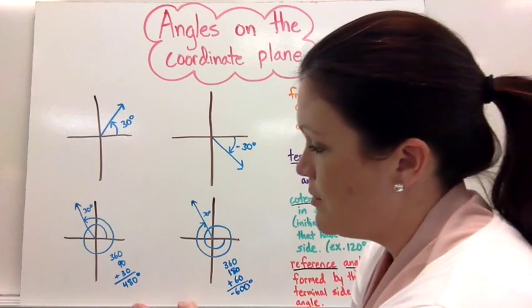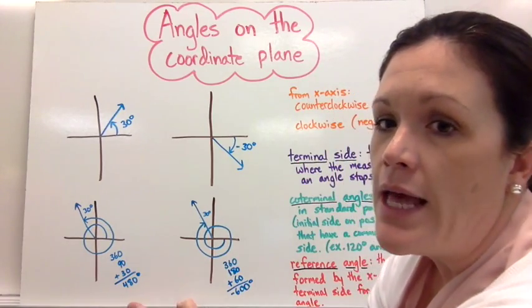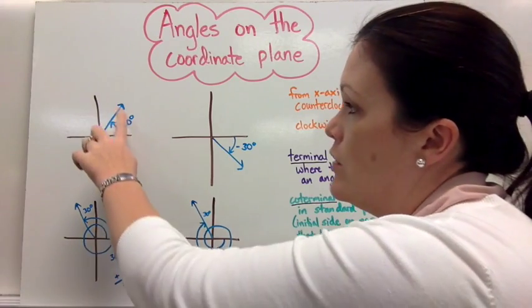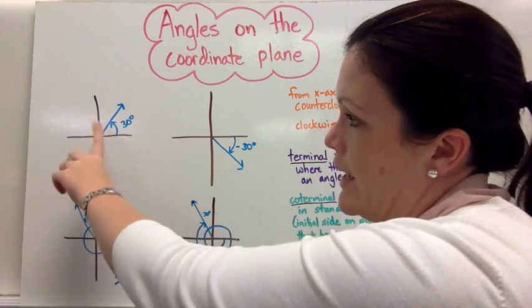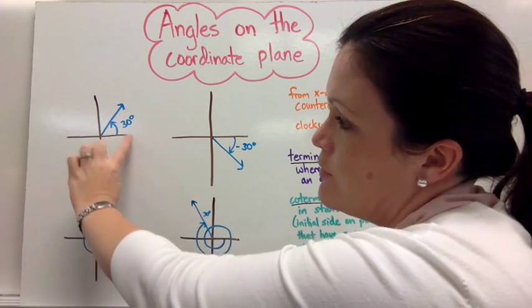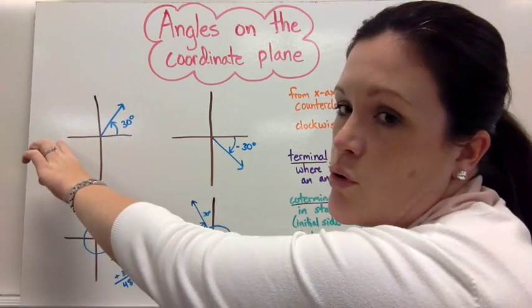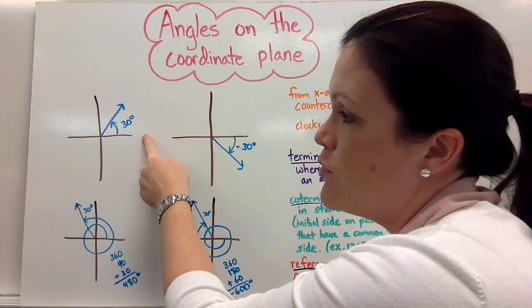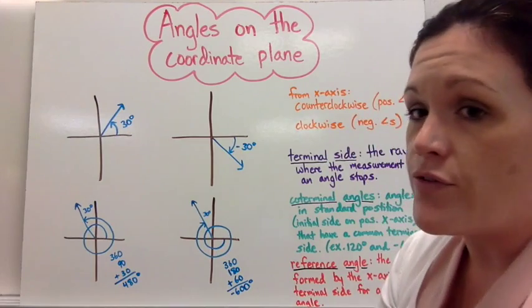Then I drew two more pictures here because sometimes you can be given an angle that's more than 360. If you remember from the coordinate plane, a 90 degree angle would be straight up, 180 would be halfway around the whole coordinate plane, and then this one would be 270, and this one would be 360. But what if you go even further than that?